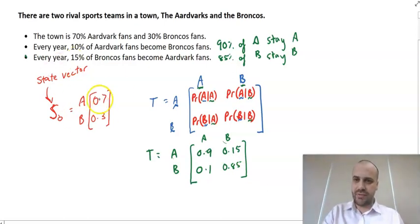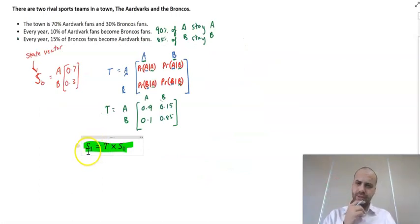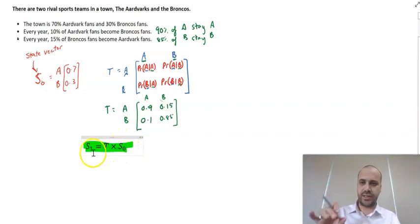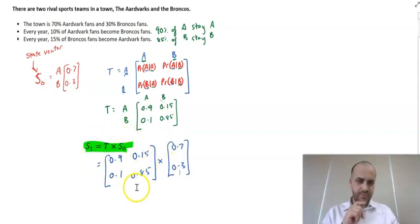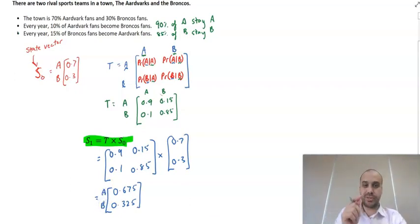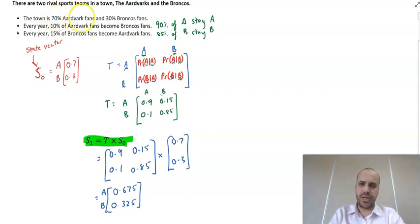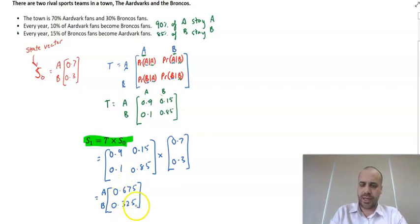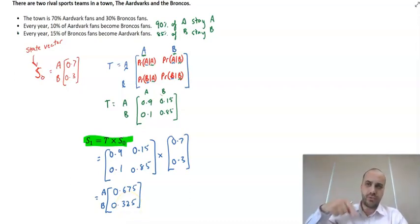Now I have all the tools: a state vector, my initial vector, and my transition matrix. The key formula is: state one, the state after one year, is equal to the transition matrix times the initial state vector — S1 = T × S0. Multiplying them together gives us the percentage of Aardvark and Bronco supporters after one year. We started with 70% Aardvark supporters and 30% Broncos, and we're now down to 67.5% Aardvark and up to 32.5% Bronco.